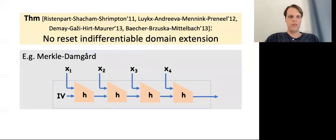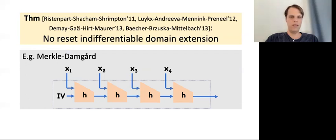Unfortunately, reset indifferentiability itself has a major limitation. Ristenpart et al. proved an impossibility — later refined and strengthened by several follow-up works — showing that domain extension is impossible under reset indifferentiability. Domain extension is just taking a small domain ideal object, like a small random oracle, and constructing a large domain object, such as a big random oracle or even a random oracle with an unbounded domain, which is what you would do with Merkle-Damgård or the sponge construction. So Merkle-Damgård and the sponge construction for long messages actually can't be reset indifferentiable, in contrast to the plain indifferentiability setting where we have such proofs.